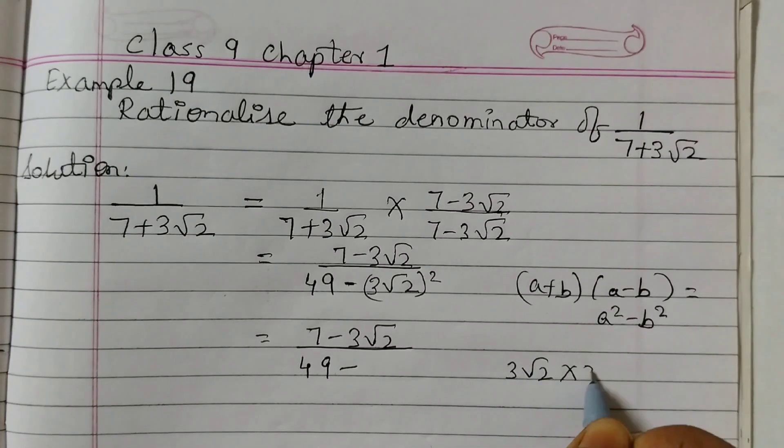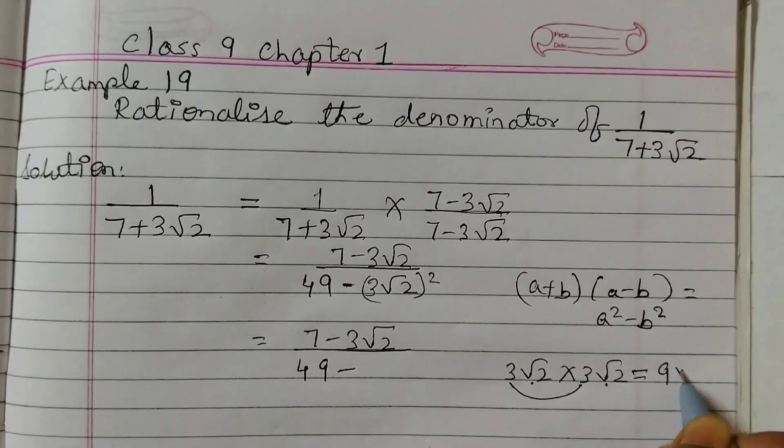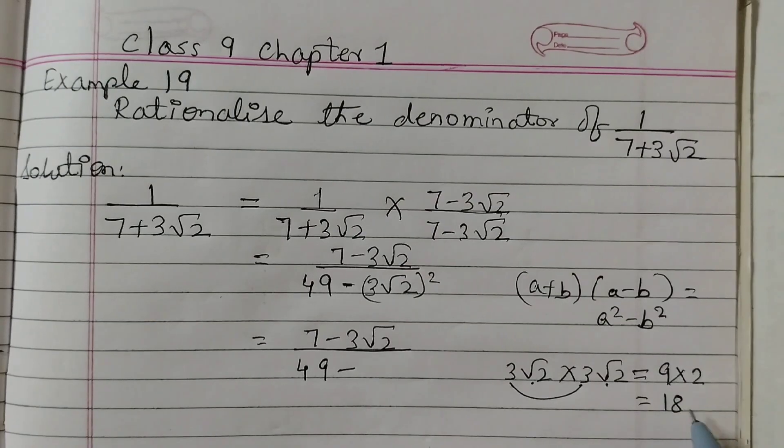So 3 root 2 into 3 root 2, 3 times 3 is 9 and root 2 into root 2 is 2. So 7 minus 3 root 2 equals to 9 into 2 that equals to 18.